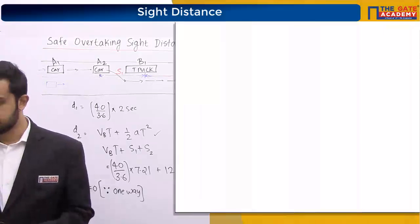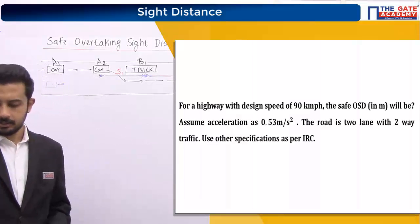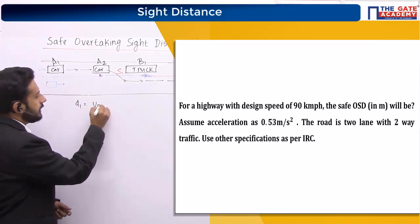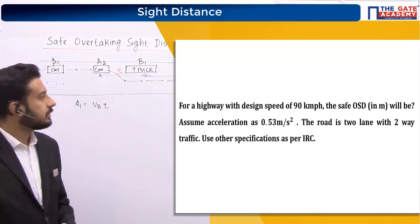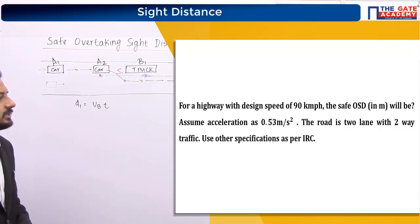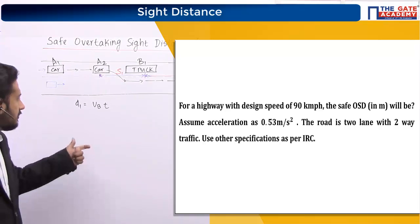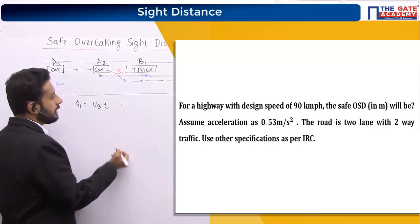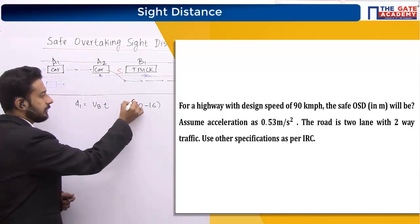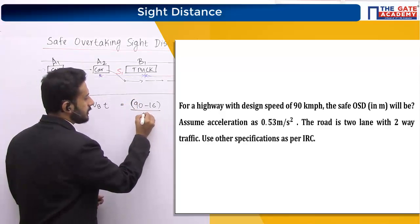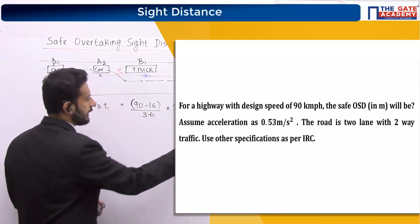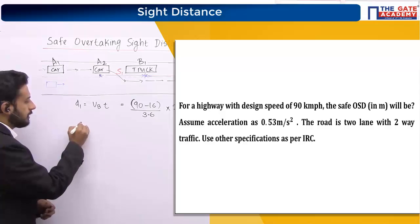Do this question also — let us solve it. What will be D1? D1 equals VB into small t. But VB is not given in the question, so what we do: VB equals VA minus 16. VA is given as 90 kmph, which means VB will be 90 minus 16 kmph. I have to convert into meters per second, so divide by 3.6, then into 2 seconds.